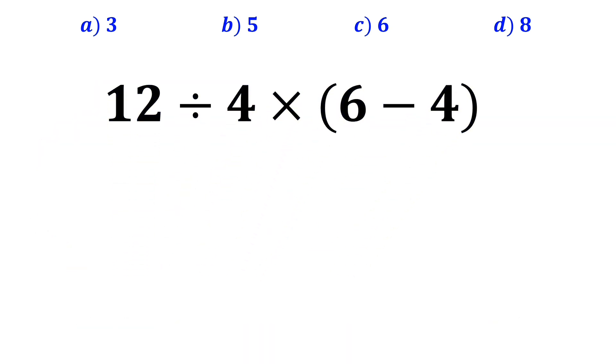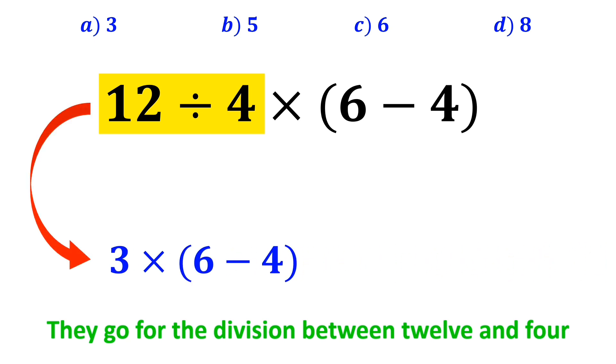In the next step, they go for the division between 12 and 4, and this expression simplifies to 3 times 6 minus 4 inside the parenthesis.